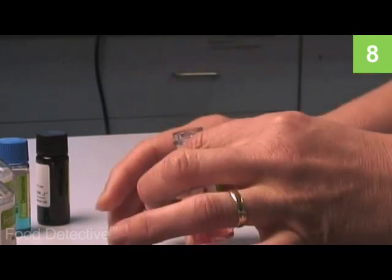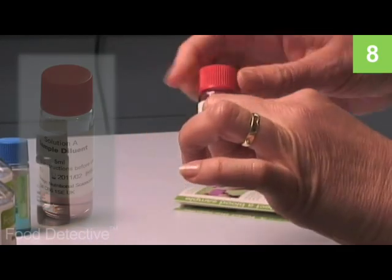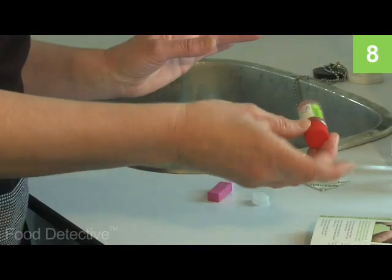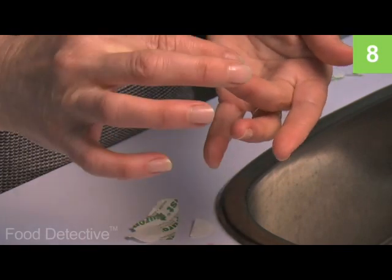When the blood has been collected remove the cap from the bottle containing solution A and place the glass tube into the liquid. Replace the cap securely and shake gently to disperse the blood fully. Clean the puncture site and use the plaster provided.